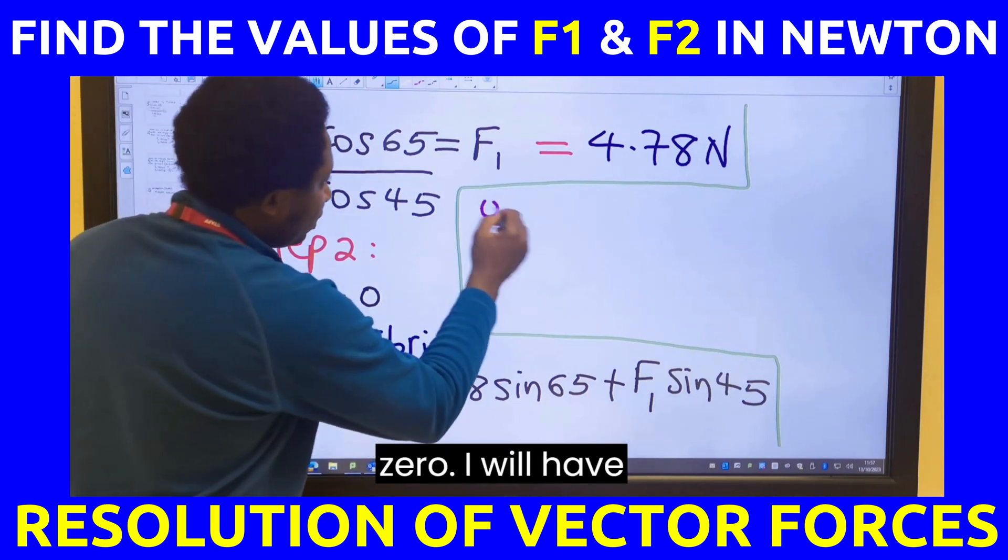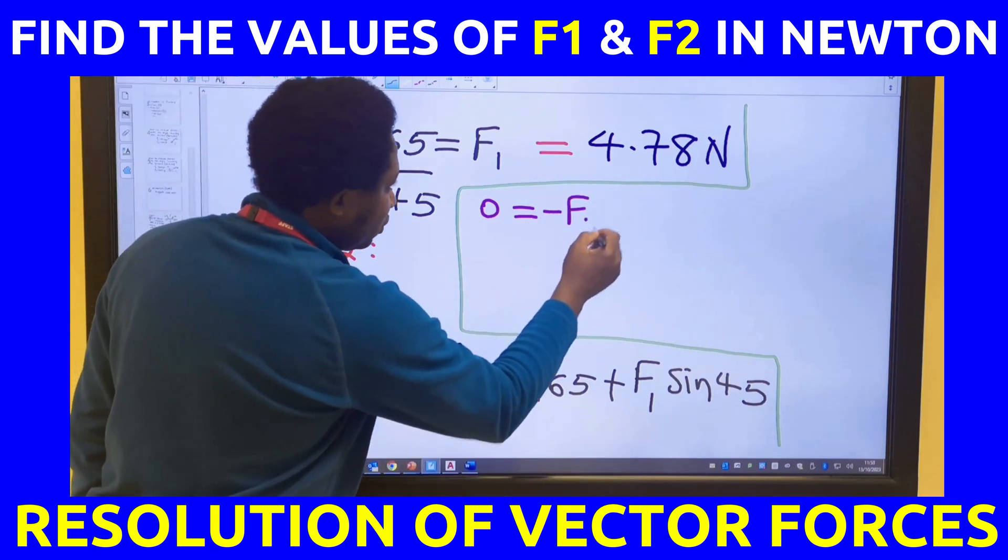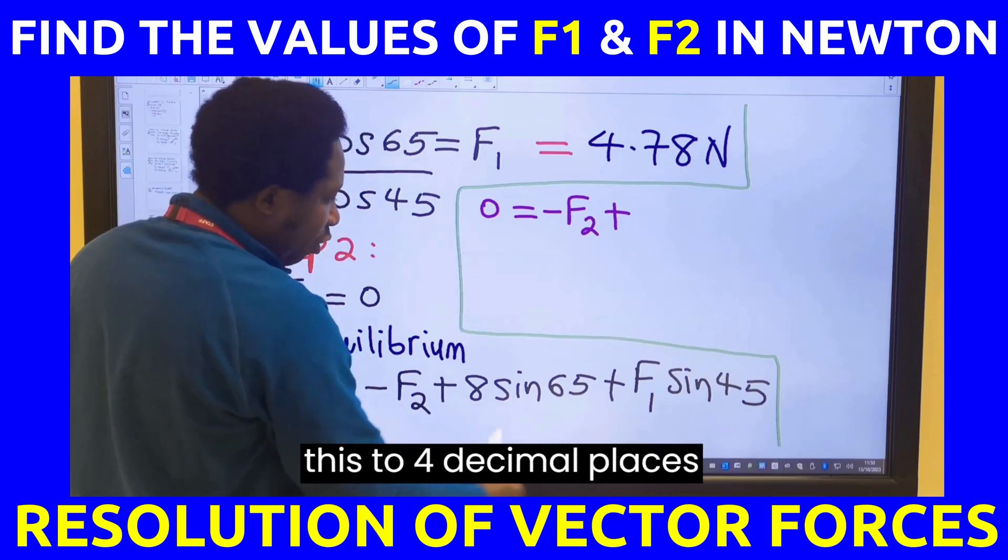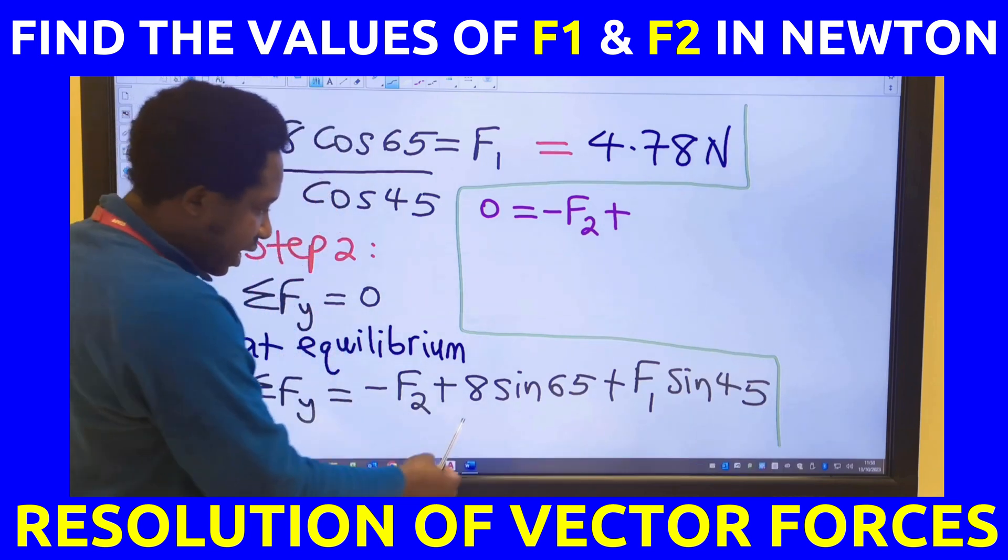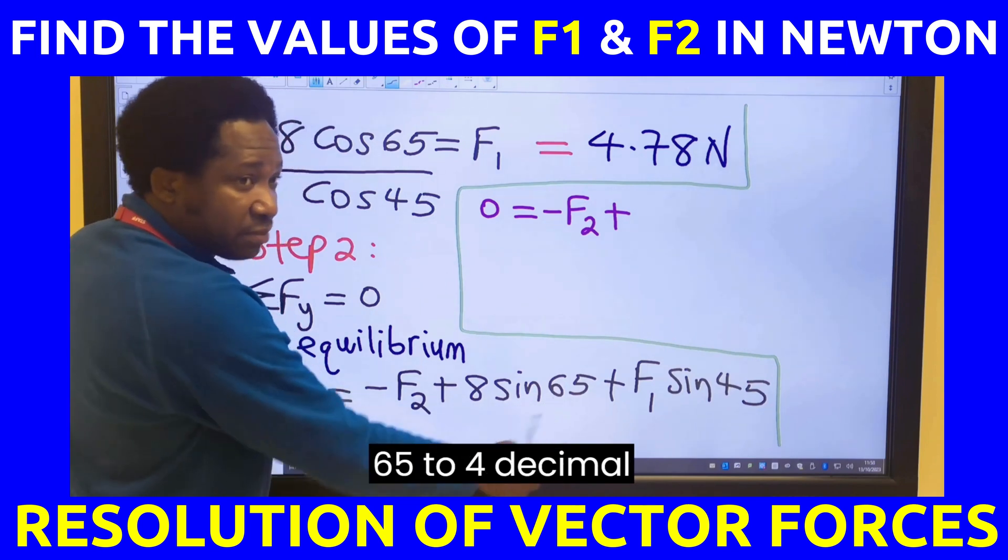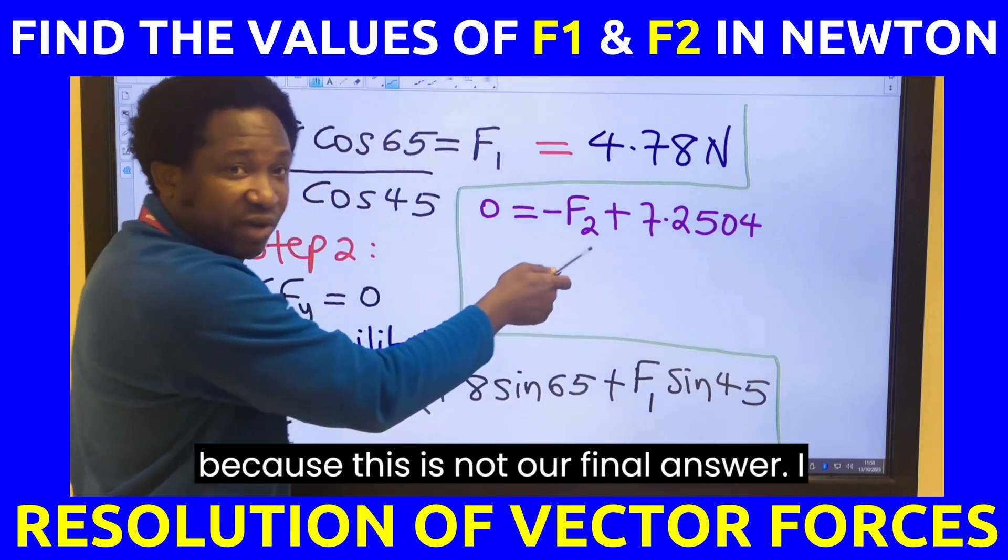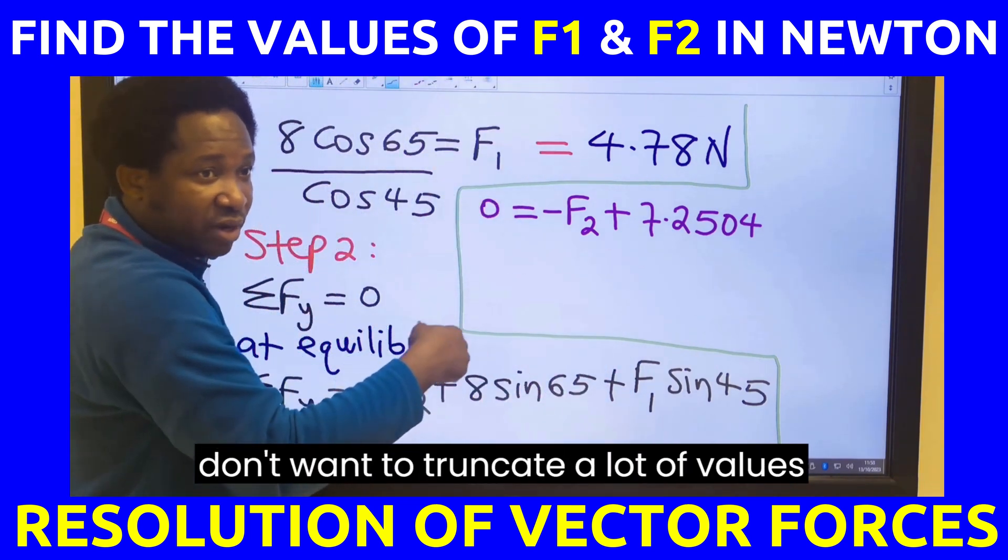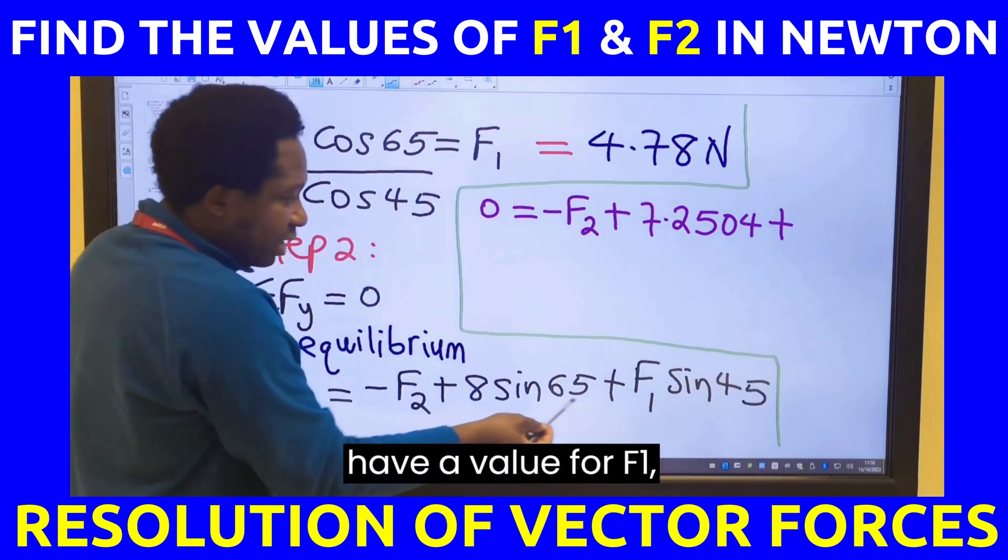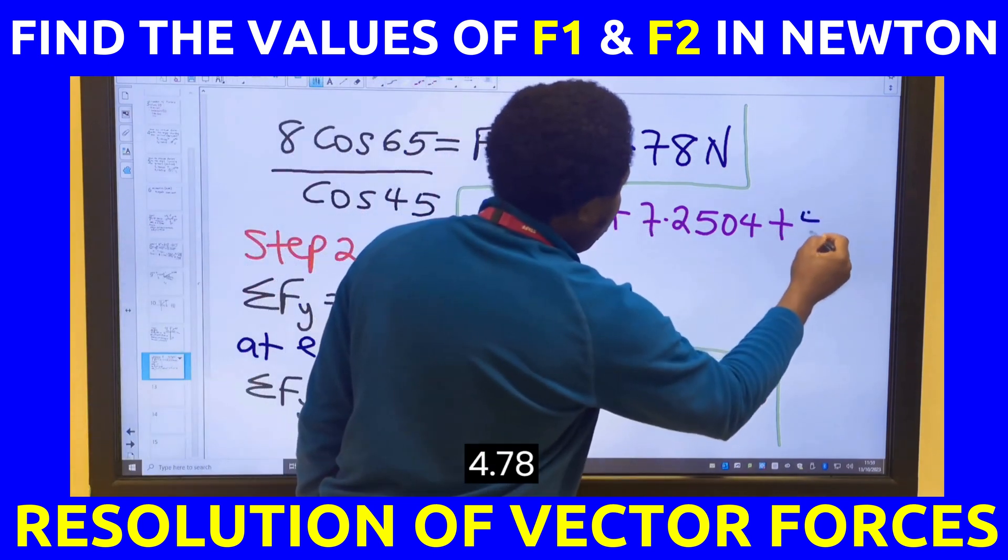I will have 0 is minus F2 plus, can you give me the value of this to 4 decimal places? 8 multiplied by sine 65 to 4 decimal places. I need it to 4 decimal places because this is not our final answer. I don't want to truncate a lot of values. Plus we have a value for F1. So it will be 4.78